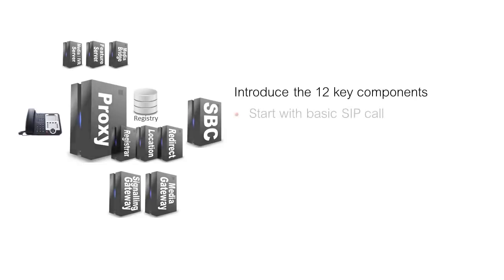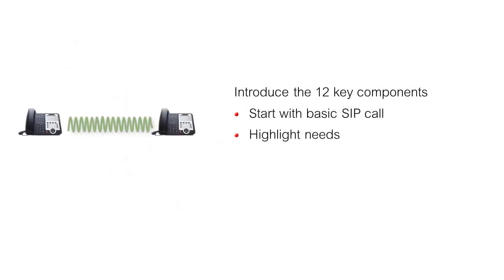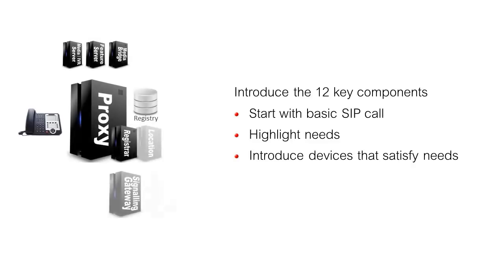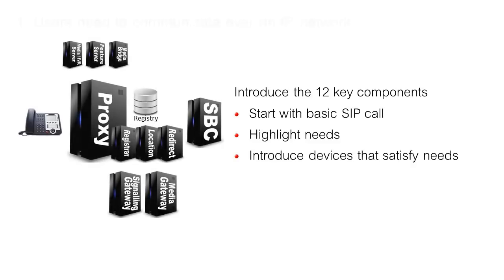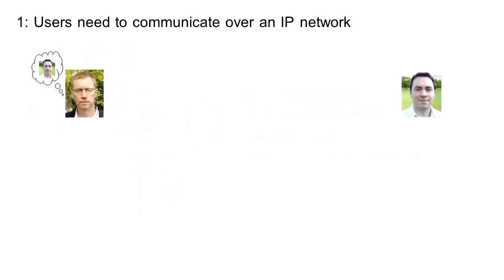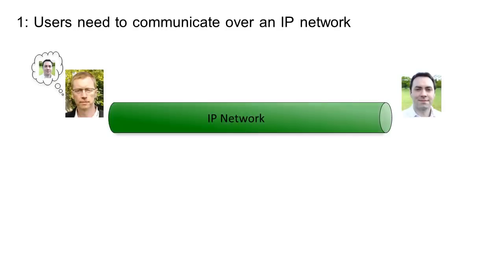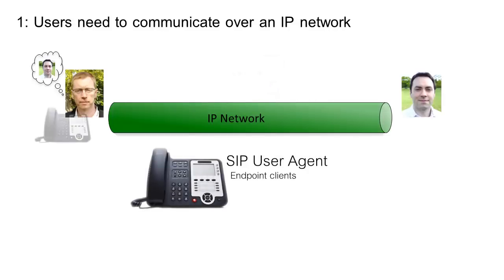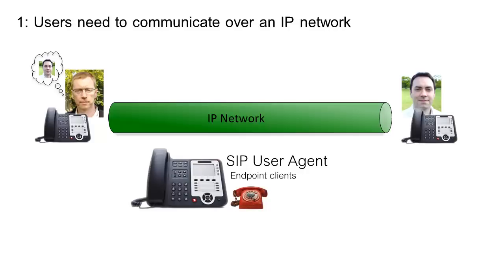The plan is to start with a basic call, highlight needs, and then one by one introduce the devices which meet those needs. Need number one: two users need to communicate over an IP network. How do they do it, and with what tool? The SIP user agent. User agents are endpoint clients, equivalent to the good old house phone in traditional telephony, through which we make and receive calls.